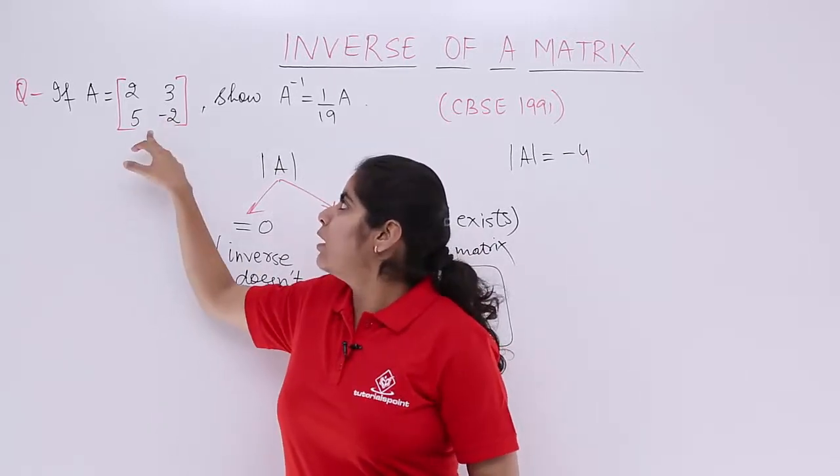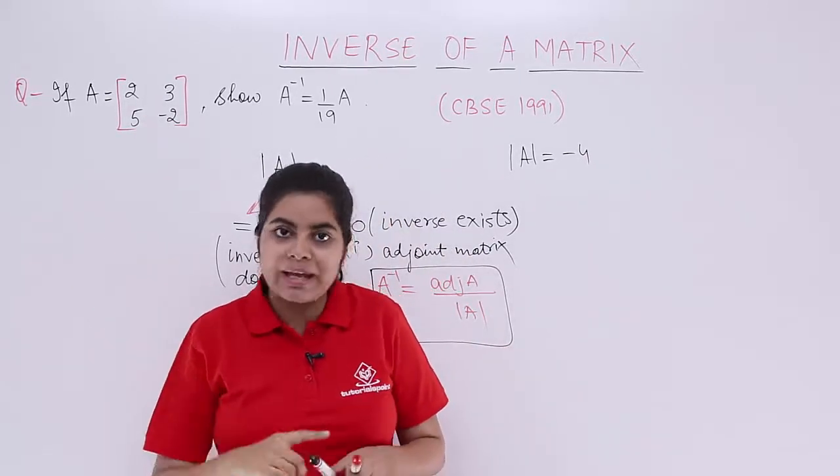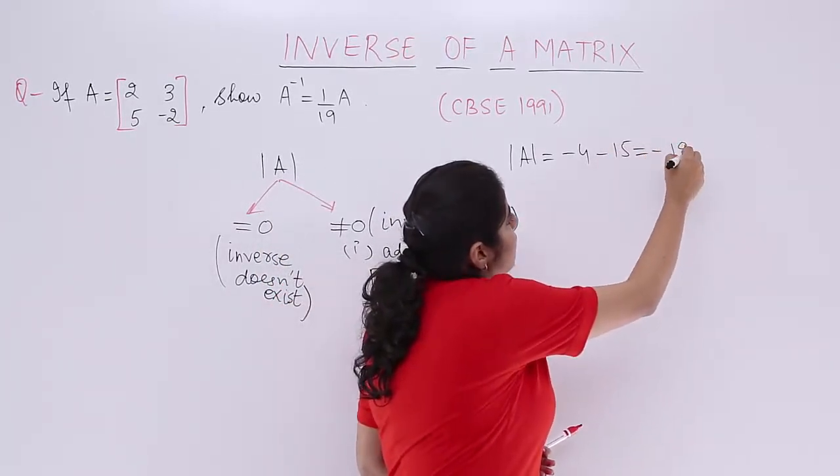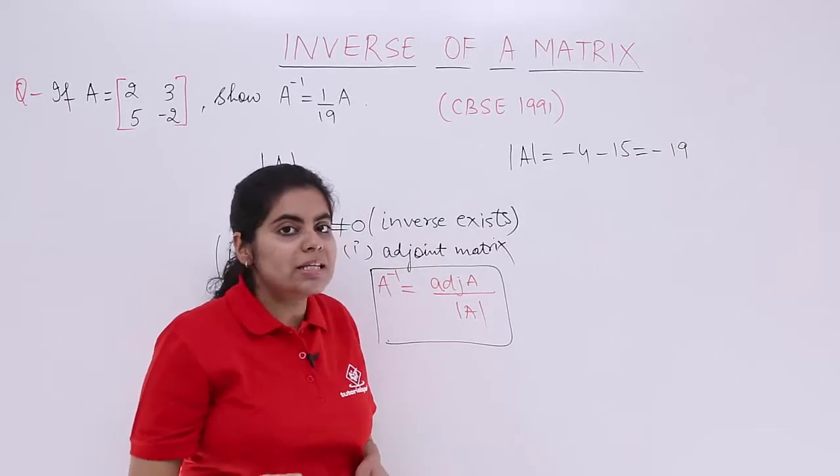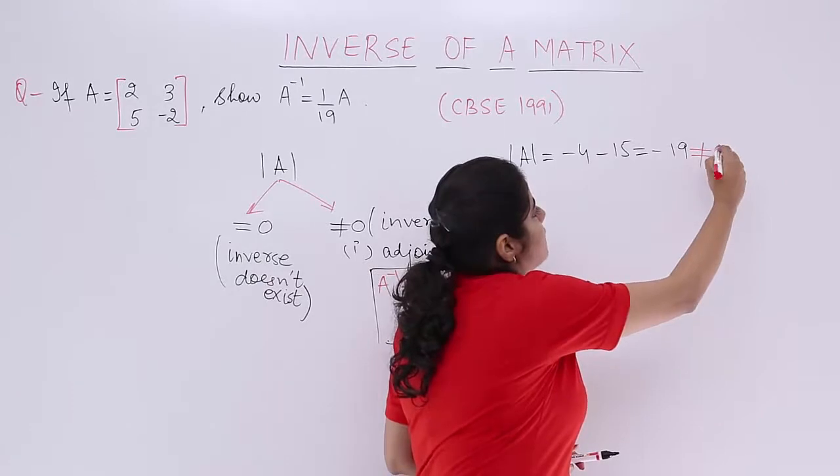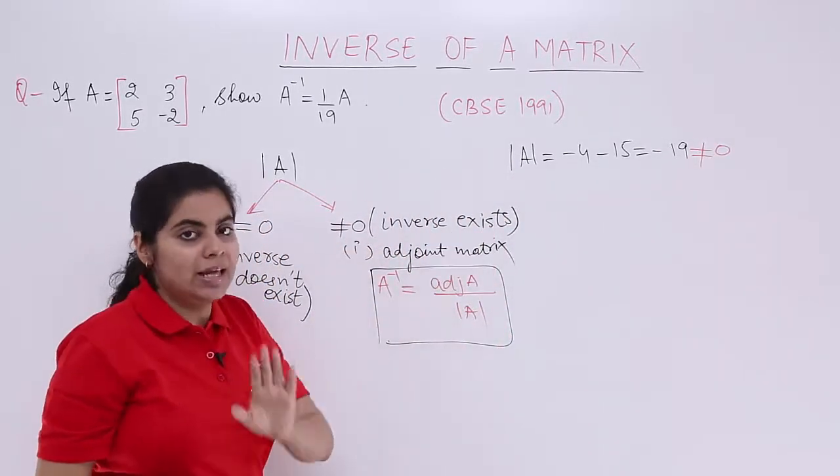Going bottom to up, you have 5, 3 is 15 and bottom to up makes one more negative come into picture. So it is minus 15. Hence, it is minus 19. Now minus 19 is not equal to 0 in any circumstance. So yes, it is not equal to 0 and for not equal to 0, my inverse will exist.